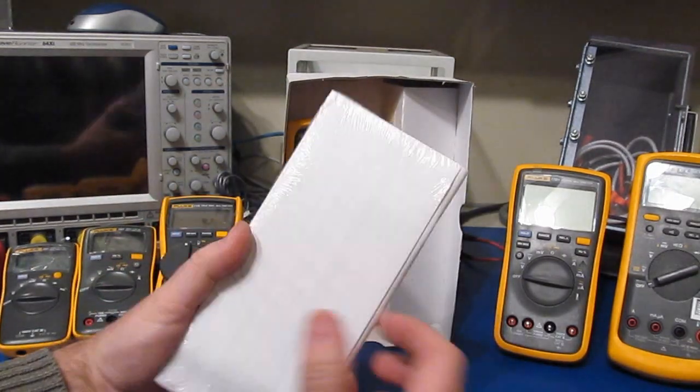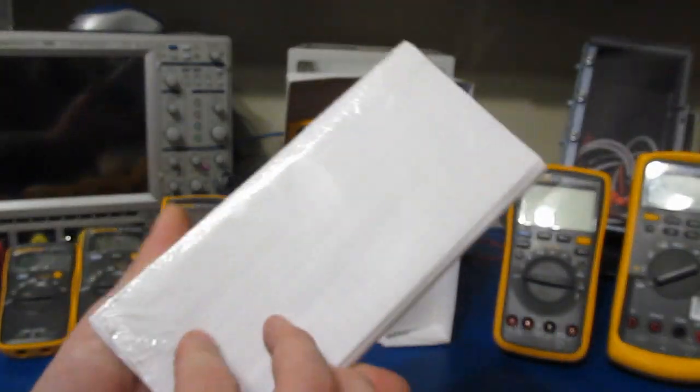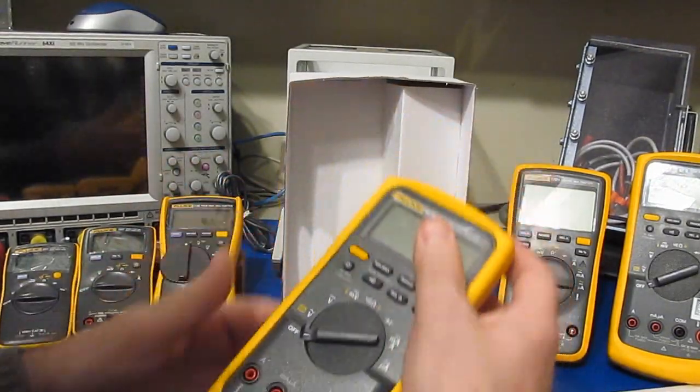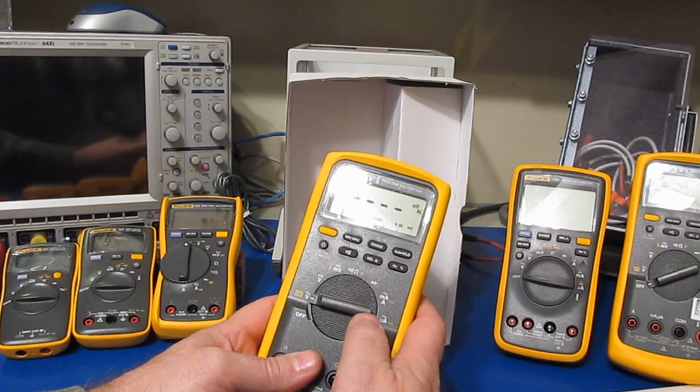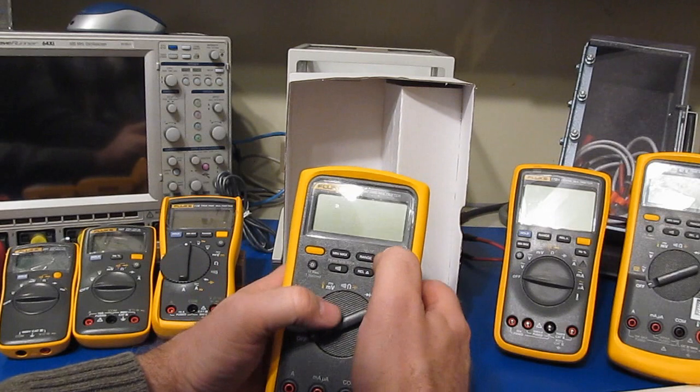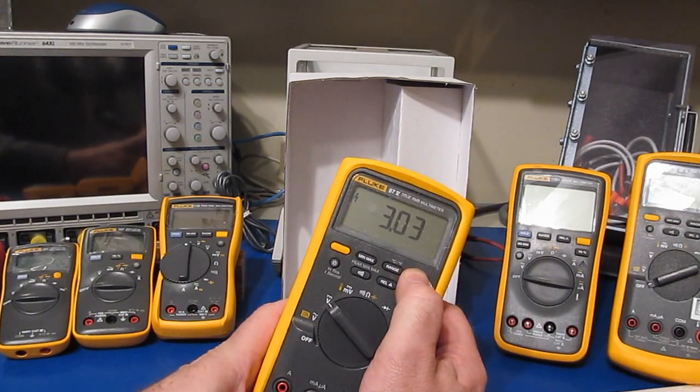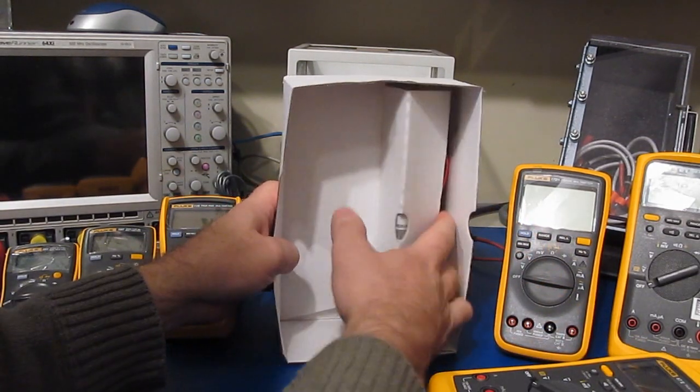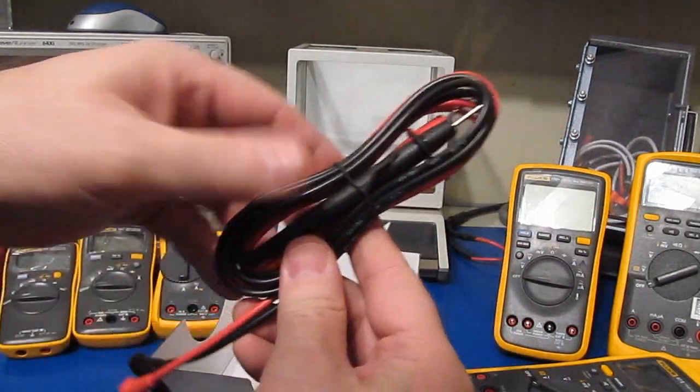So it doesn't look like it comes with a manual. My guess is this is probably the calibration information. The meter itself looks like it comes with batteries. I would assume that this is version 303. Yep. So it's got the latest firmware that I'm aware of.